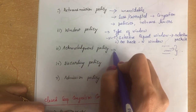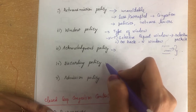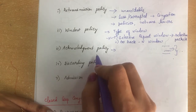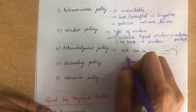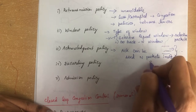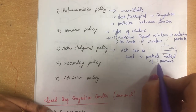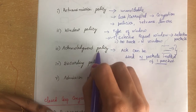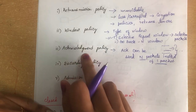Acknowledgement policy: if the receiver does not acknowledge every packet, it may slow down the sender and help prevent congestion. Instead of sending an acknowledgement for every packet, one acknowledgement is sent for n packets. This reduces the number of acknowledgement packets and in turn prevents congestion.